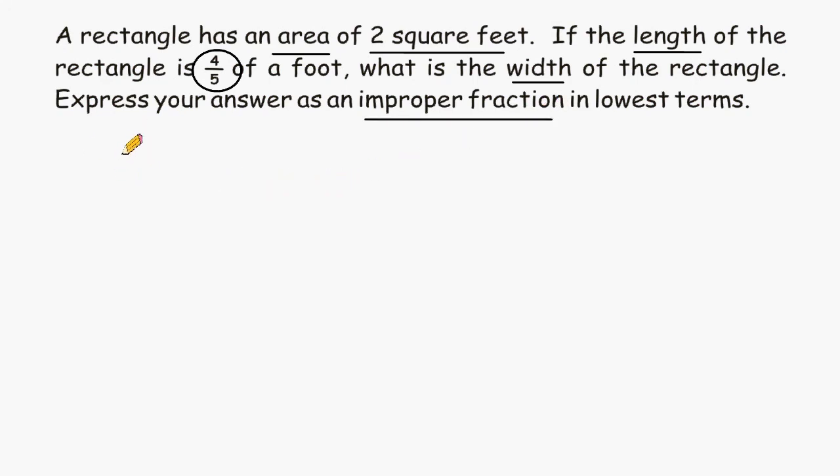So this problem gives us the length of the rectangle, which is 4 fifths, and we have to figure out what the width of that rectangle is. When we multiply that width by the given length of 4 fifths, that will give us a result of 2 square feet.